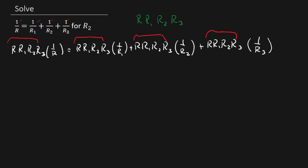Alright, so look at this. So you can see here in this one the R and this R cancel, the R1 and this R1 cancel, the R2 and this R2 cancel, and this R3 and this R3 cancel. So I'm left with R1, R2, R3 equals R, R2, R3 plus R, R1, R3 plus R, R1, R2.